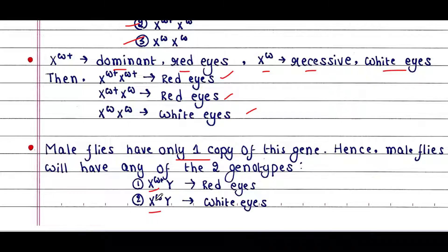Females require two copies of the recessive allele to show the same phenotype. A female fly with only one copy of the recessive allele Xw shows the dominant phenotype — red eyes — since it has two X chromosomes and the other X chromosome contains the dominant allele. This condition in males is called hemizygous, because you cannot call it homozygous or heterozygous; since males have only one X chromosome, we call it hemizygous.